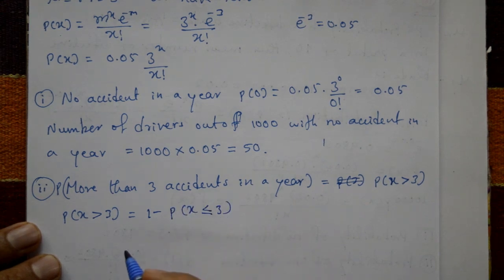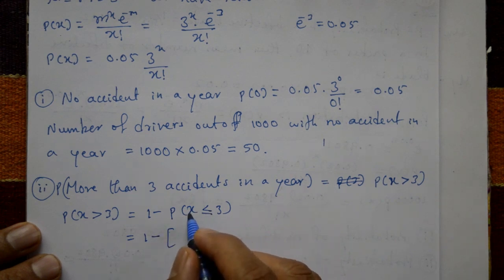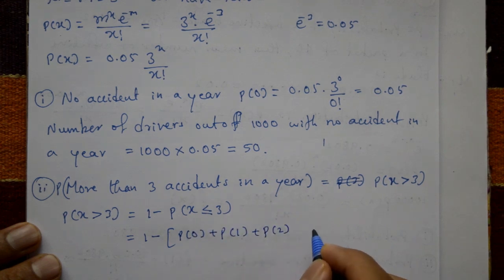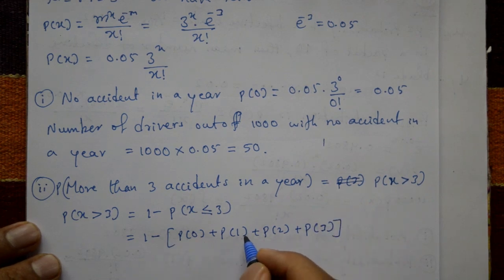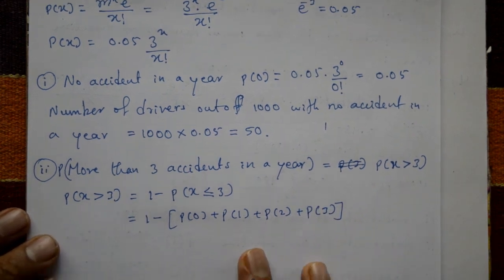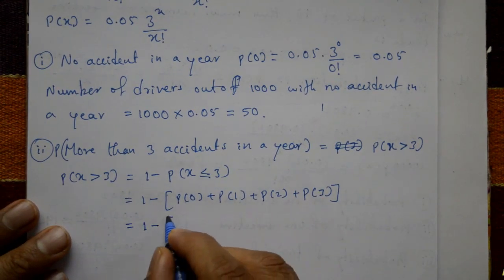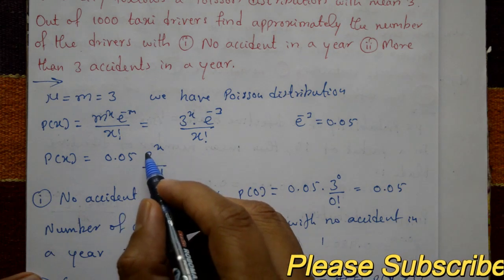That means one minus the sum of P(x less than or equal to 3), which expands to: P(0) plus P(1) plus P(2) plus P(3). Substituting x equals zero, one, two, and three into the formula.